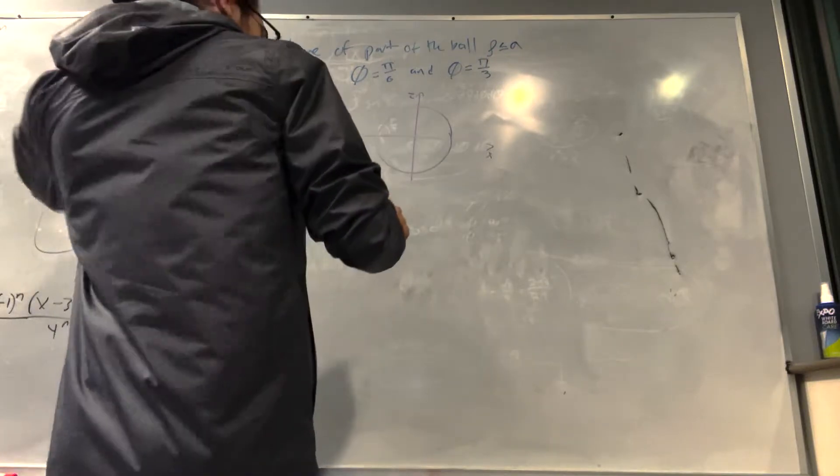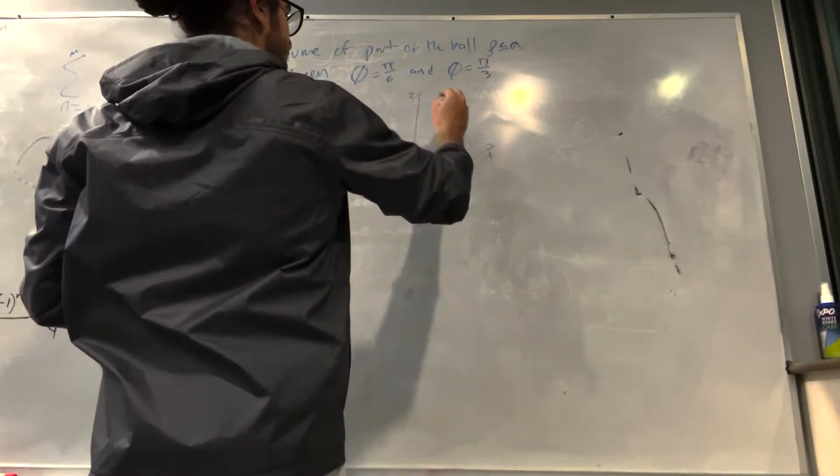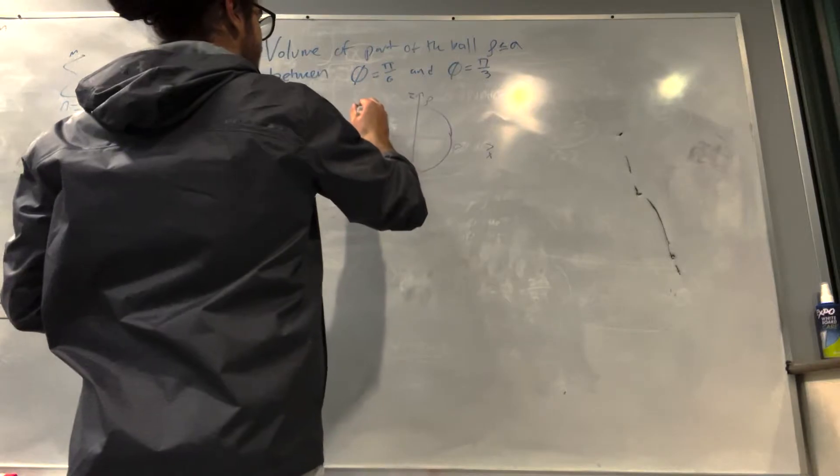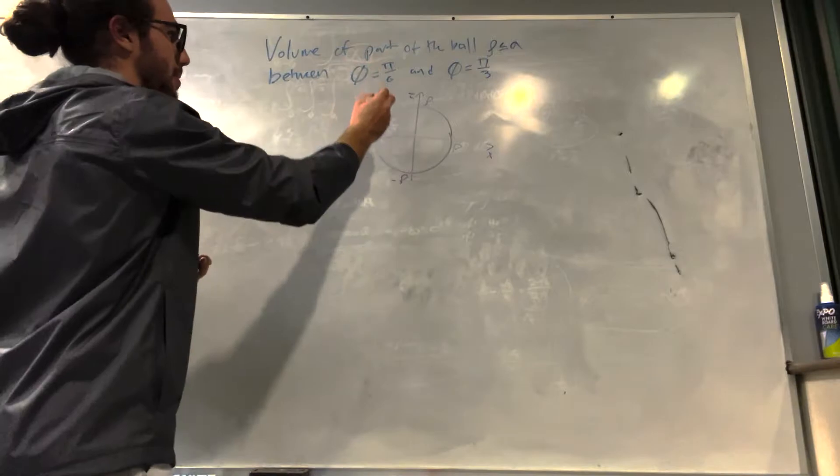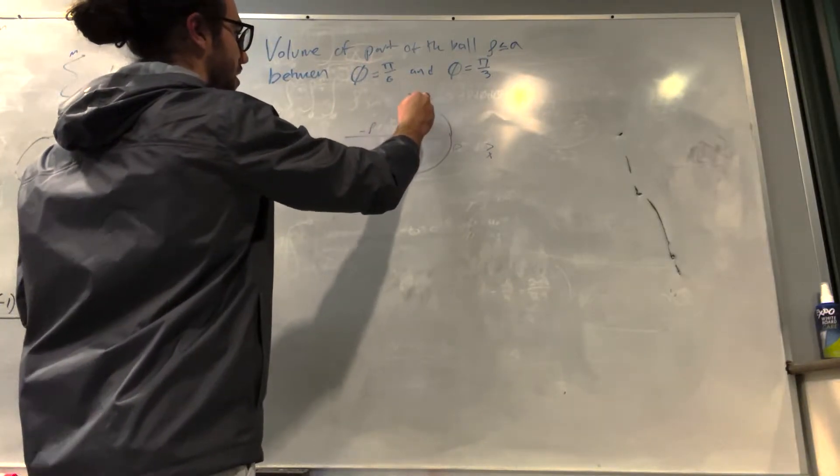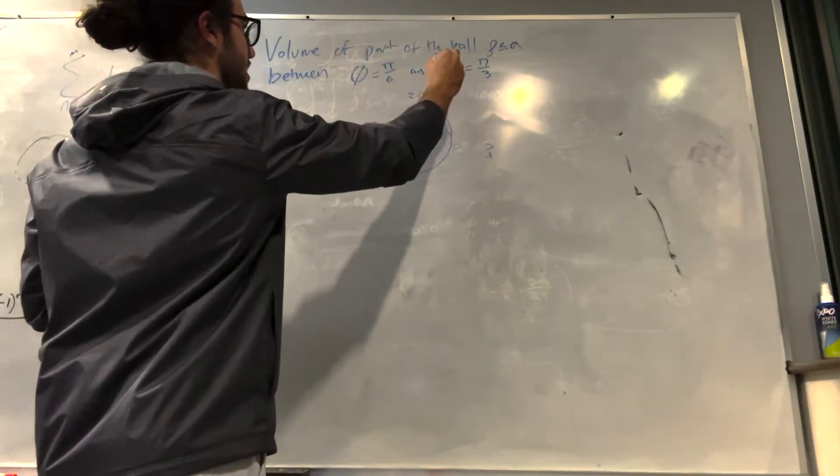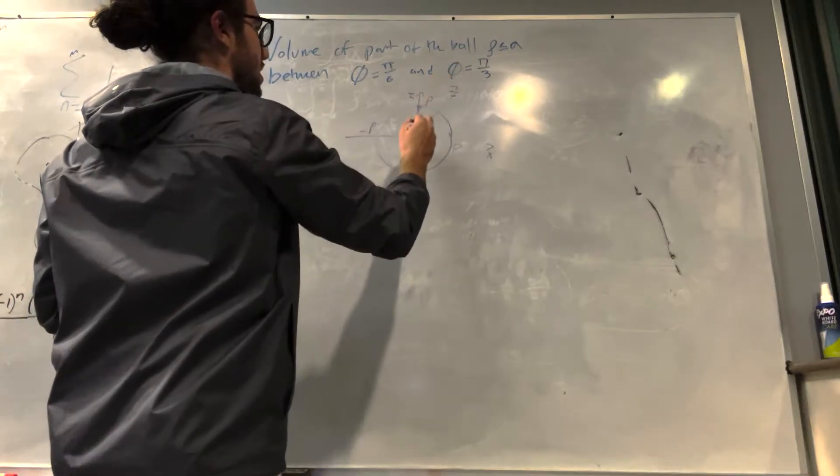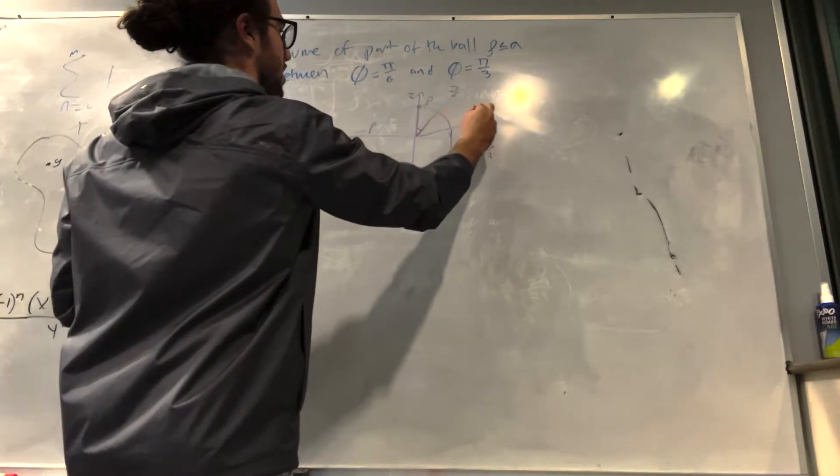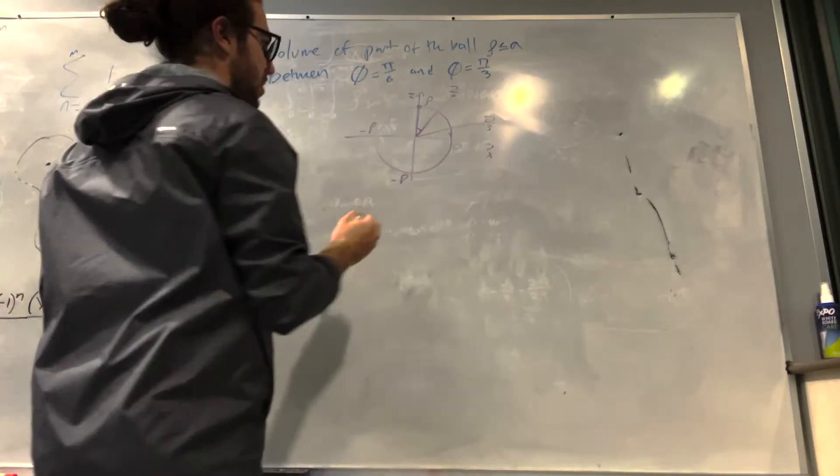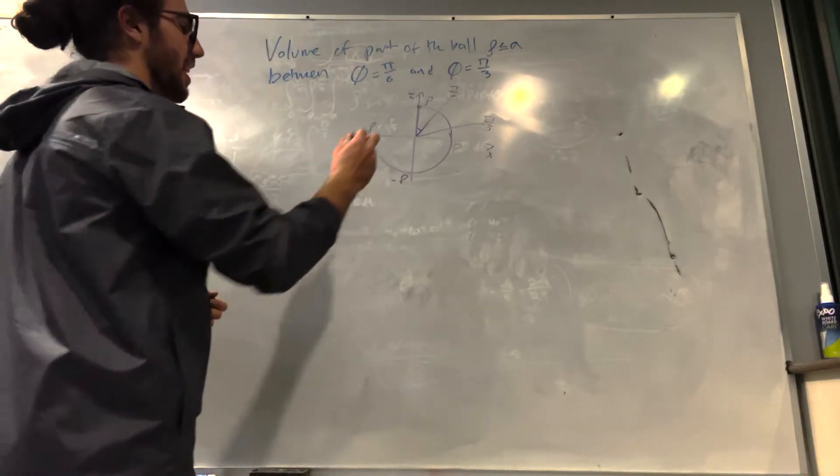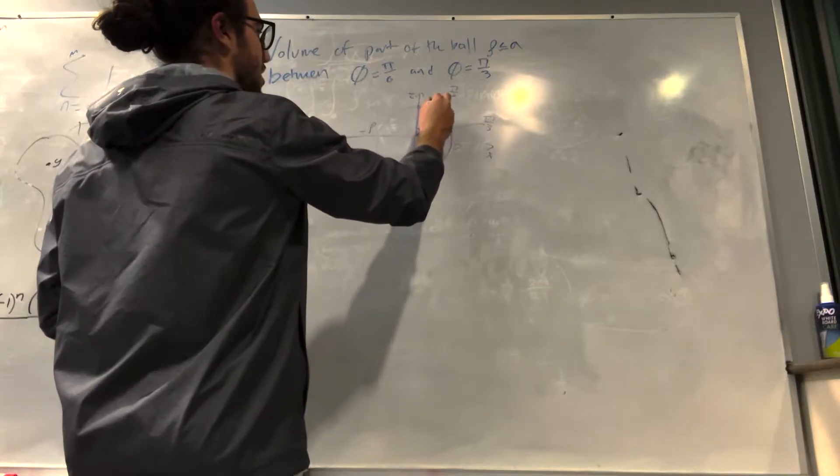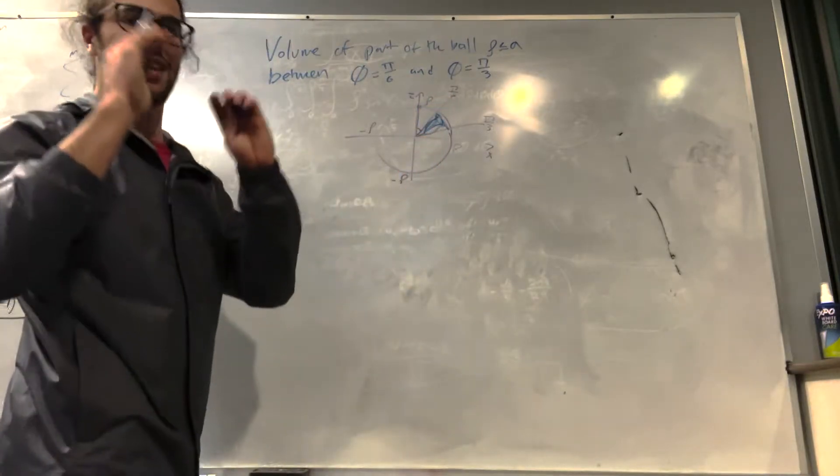Phi is equal to these. Okay, so this is, you can basically think of this as like this is the radius. Now, this goes from phi equals pi over 6. So you start at the top here and you go down pi over 6. This is pi over 6. And then pi over 3 is here. This marker is really bad. Alright, so basically you're finding this. But it's a ball. It's like rotated around.